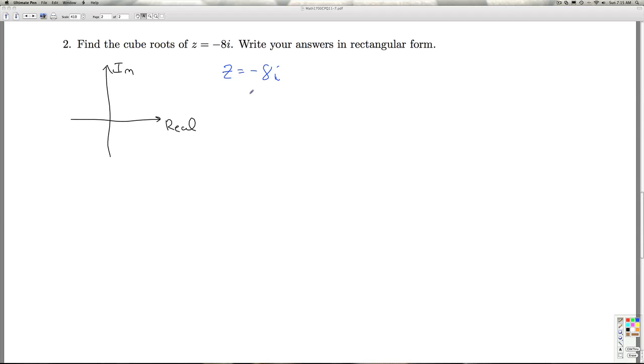So once again, if I think of this as a plus bi, this corresponds to the point 0, negative 8. So that's 8 units down the y-axis.